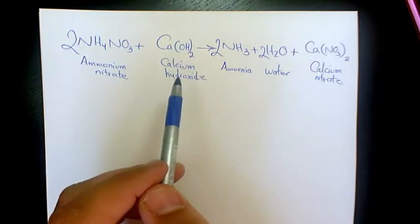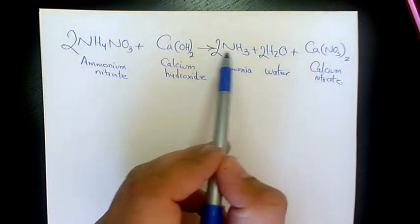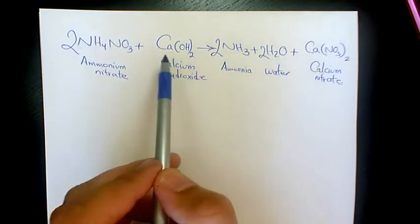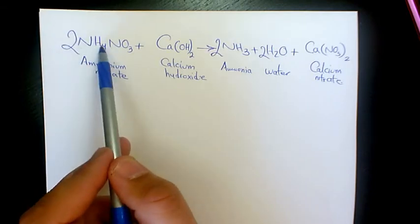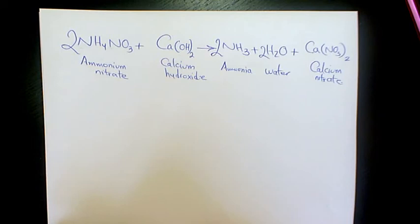Now the last one is hydrogen. Hydrogen is 2 times 2 which is 4, and here we have 2 times 3 which is 6, so 6 plus 4 is 10. Here we have 2, and here we have 2 times 4 which is 8, and 8 plus 2 is 10. So that one is balanced as well.